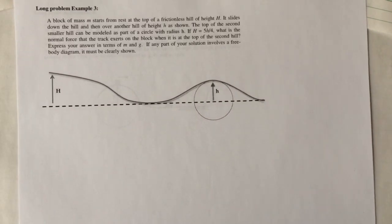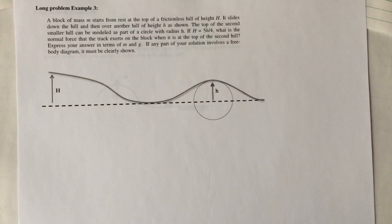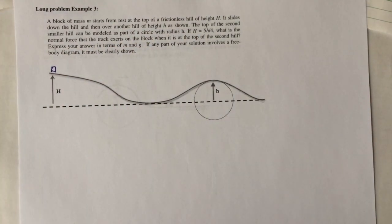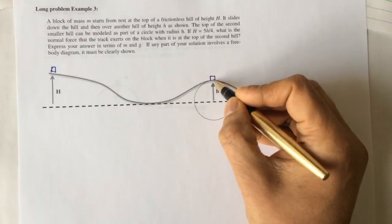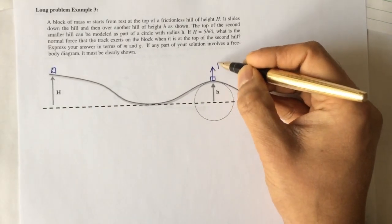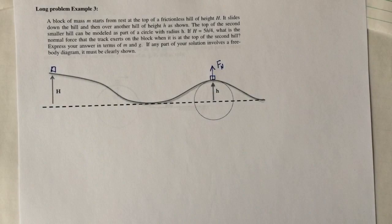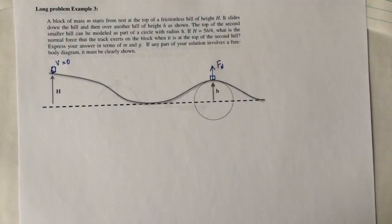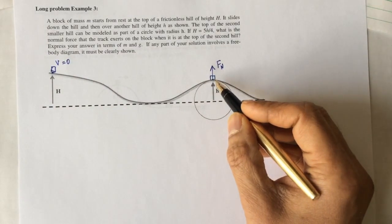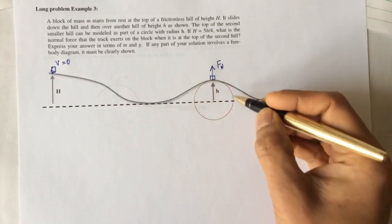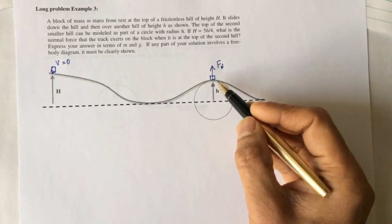Long problem example 3 has a block of mass m that starts over here, then slides down the hill and over another hill. At the top of the small hill, the normal force it exerts is what we need to find. We are told it starts from rest, so the velocity here is zero. To find the normal force at this point, we need to find the speed at this point first, then use Newton's second law on a circular path.